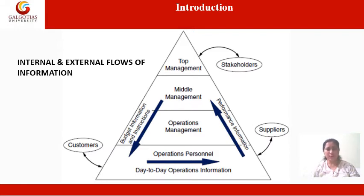The vertical flow distributes information downward from senior managers to junior managers and operations personnel in the form of instructions, quotas and budgets. In addition, summarized information pertaining to operations and other activities flows upward to managers at all levels. Management uses this information to support its various planning and control functions.